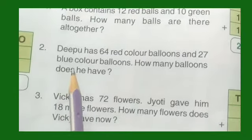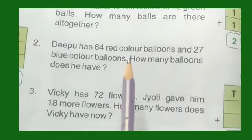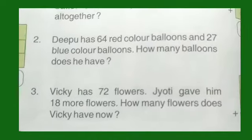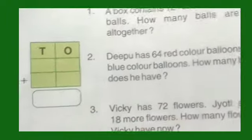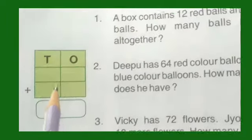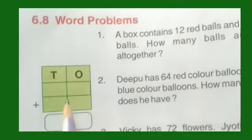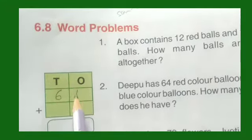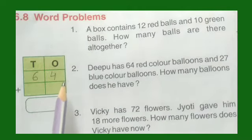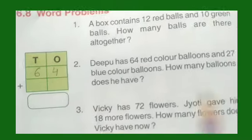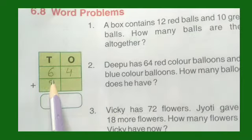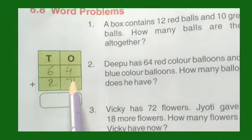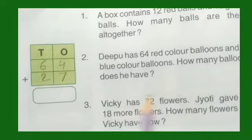Now, number 2: Deepu has 64 red color balloons. So we will write 64 — 6 in the tens house and 4 in the ones. And 27 blue color balloons. So we write down 27.